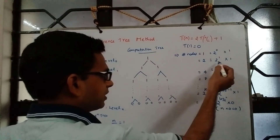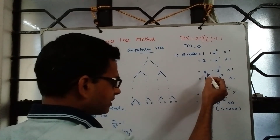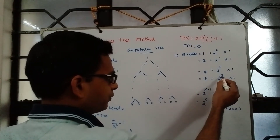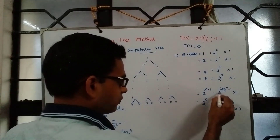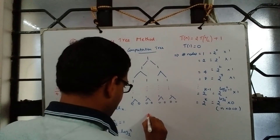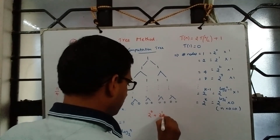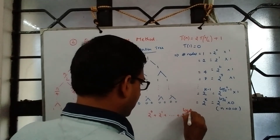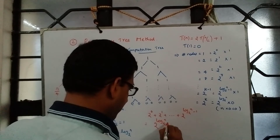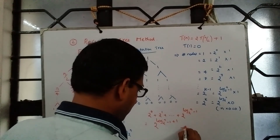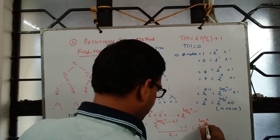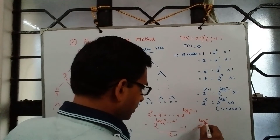At level 1 there are 2^1 nodes, at level 2 there are 2^2 nodes, and in general 2^(level number) nodes, up to level k−1 which gives 2^(log₂n − 1) nodes. We sum: 2^0 + 2^1 + ... + 2^(log₂n − 1). This geometric series equals 2^(log₂n) − 1, and since 2^(log₂n) = n, the total cost is n − 1.